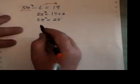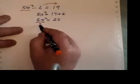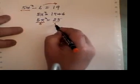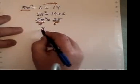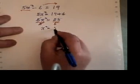Now I want to get the power by itself. It's being multiplied by 5 so I'll divide both sides by 5. When I do that the 5's cancel and I'm left with x squared equals 5.